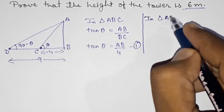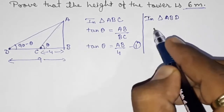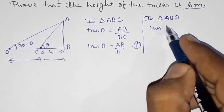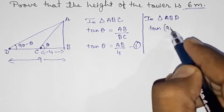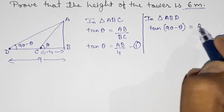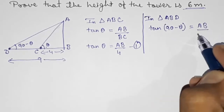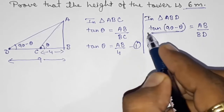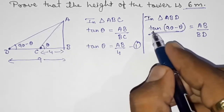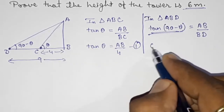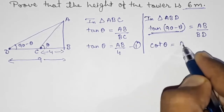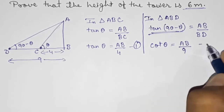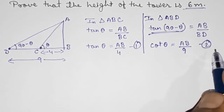Now in another triangle ABD, the angle is 90 minus θ, so tan(90 minus θ) equals AB upon BD. As you learned in Exercise 8.3, tan(90 minus θ) gives cot θ, which equals AB upon BD, that is AB upon 9. Take this as Result 2.